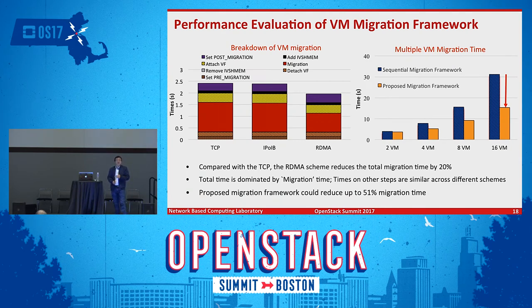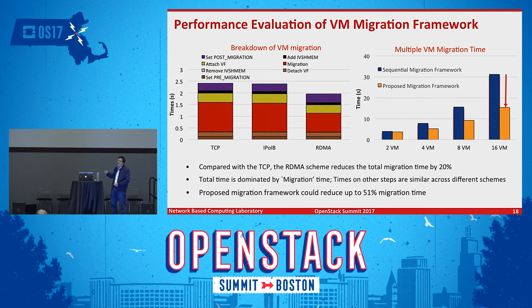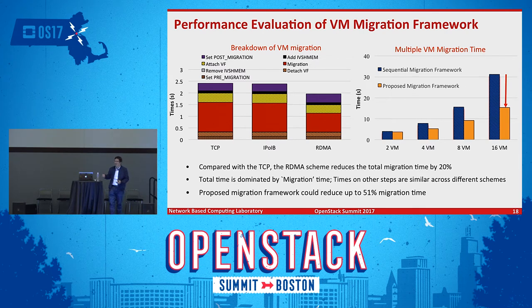Looking at migration performance, we evaluated three schemes: migrating through TCP/IP, through IPoIB, or through RDMA. RDMA gives the best performance. Due to parallelism in our controller design, our proposed migration framework is much faster than migrating VMs one by one sequentially — in the best case, we can reduce the migration time by half.